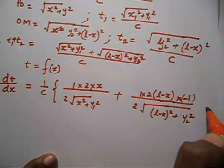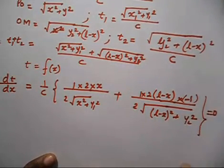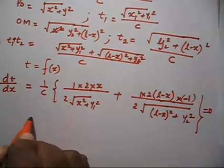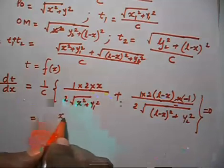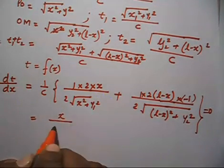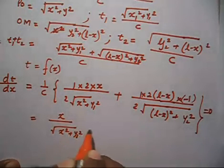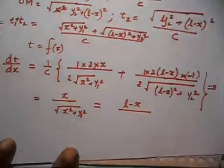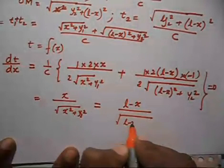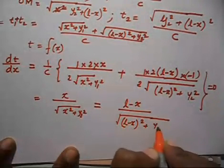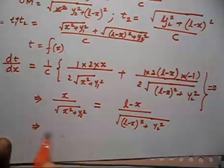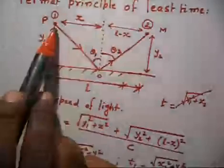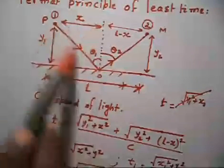If this time is minimum, this differentiation should equal 0. Setting dT/dx = 0 and simplifying: X / √(X² + Y1²) = (L−X) / √((L−X)² + Y2²). Now, X divided by this distance is simply sin(theta1).